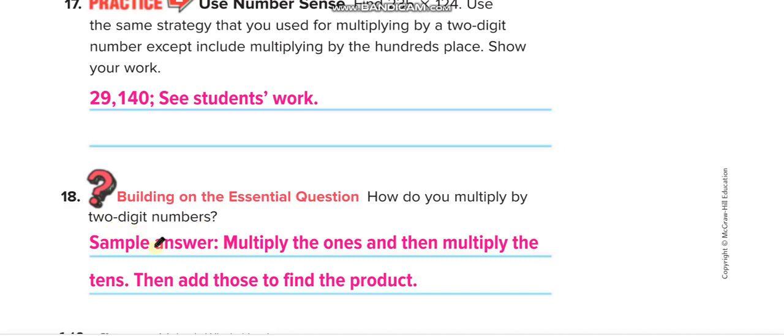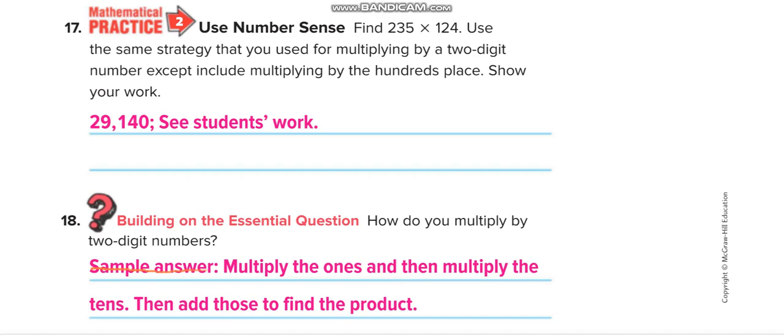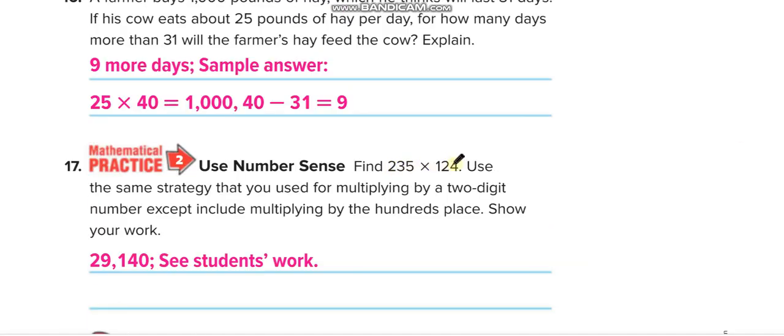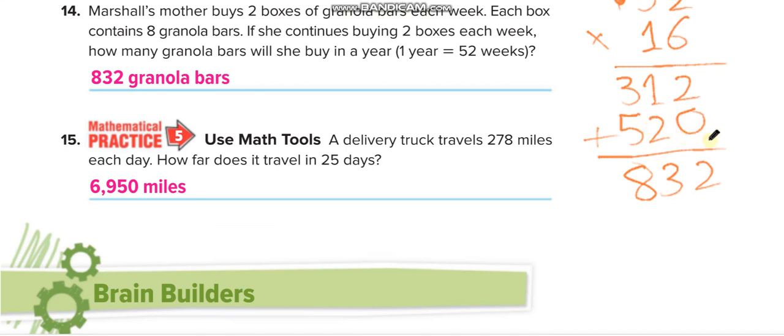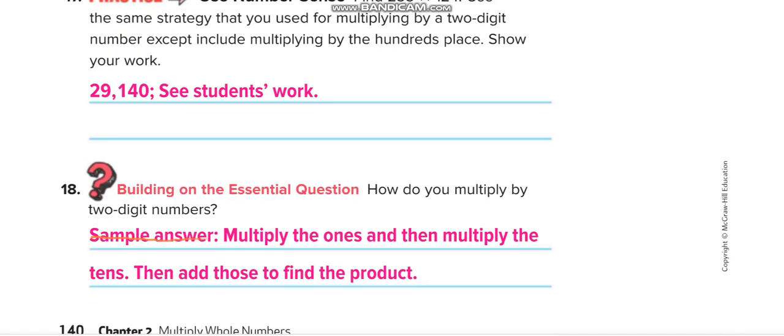And then you have to tell me the process in the comment box about this question. How do you multiply by two-digit number? Don't write this sample answer. Multiply the ones and then multiply the tens. Then add those to find the product. Okay. Boys, here you are multiplying by three digits. So you will have, just a clue for you guys, you will have three lines here, the third line. And before starting the hundred, you will write two zeros first and then you will multiply. Okay. Some hints for you guys.